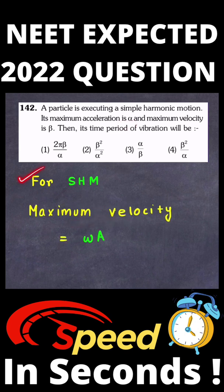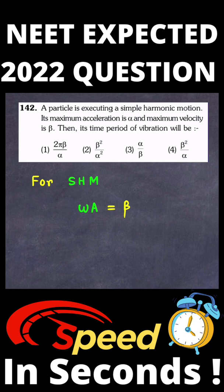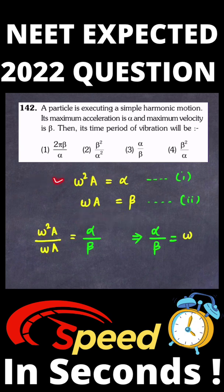For SHM, the maximum velocity is written as omega times a, where omega is the angular frequency and a is the amplitude of the particle. In this question, the maximum velocity is given to be beta, so the maximum velocity, omega times a, will be equal to beta.